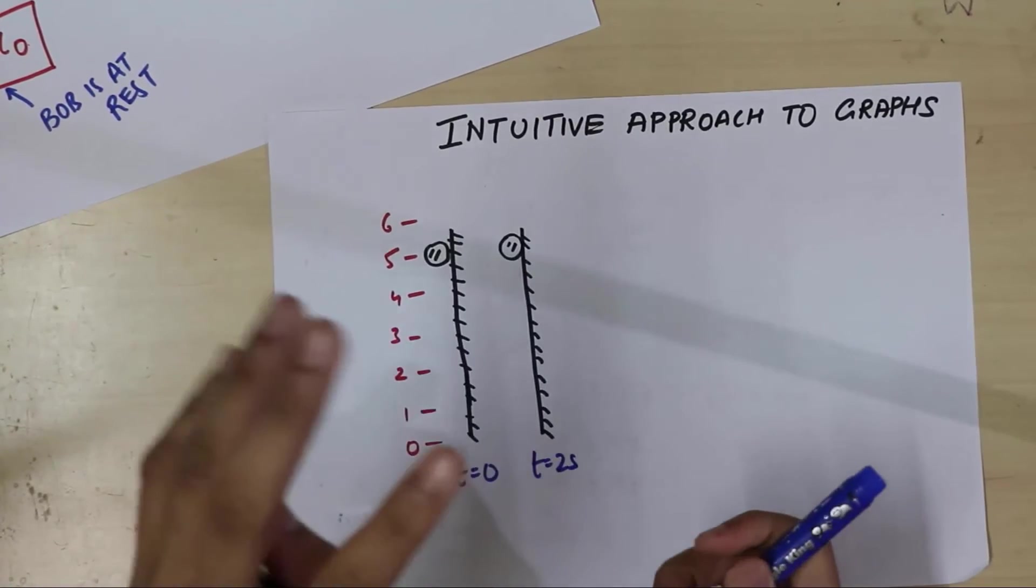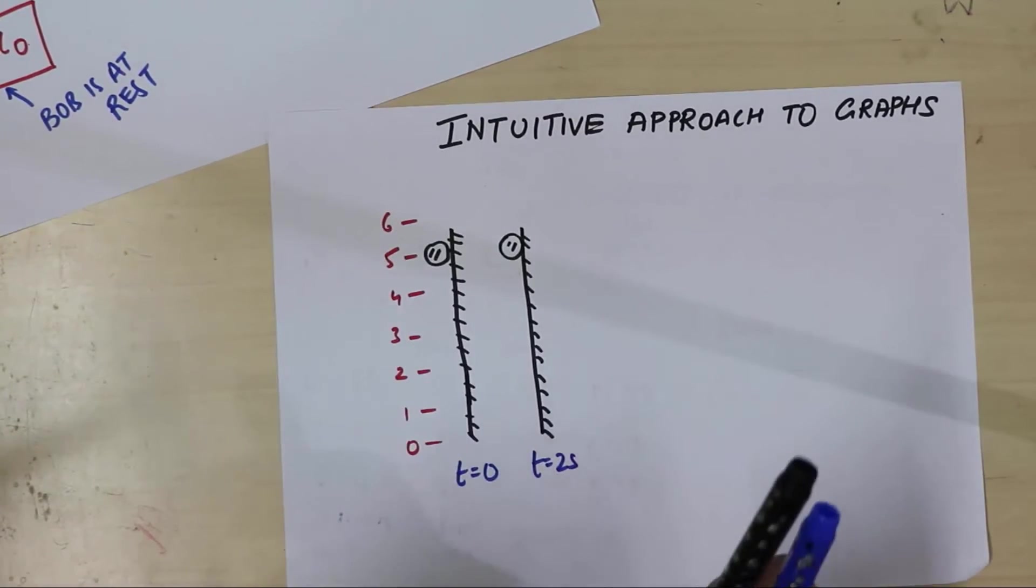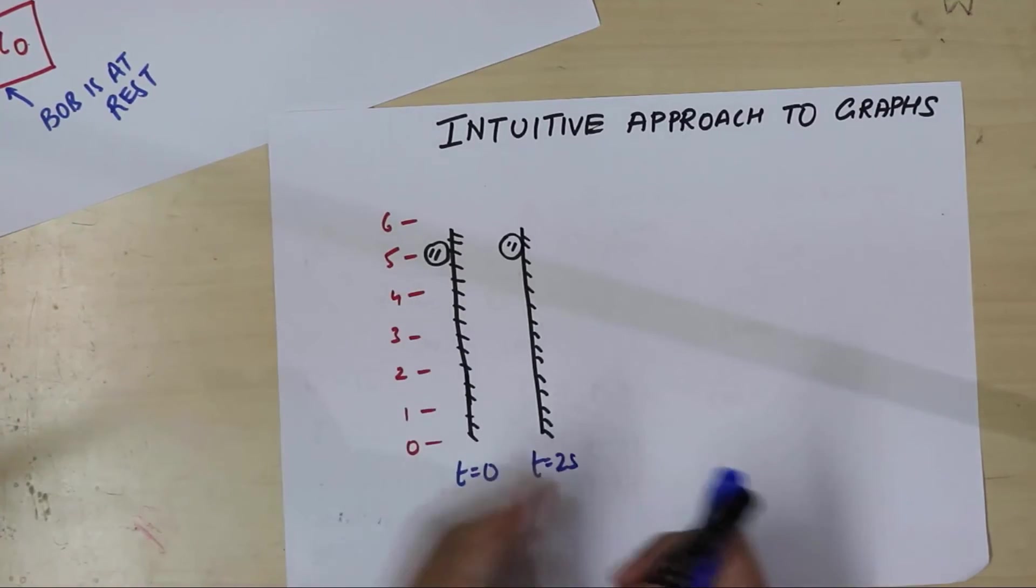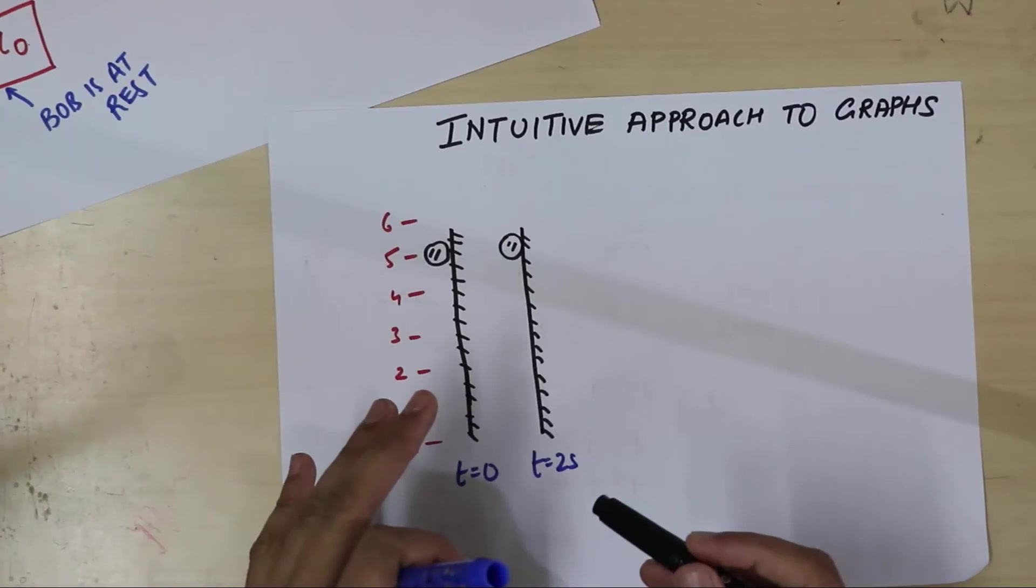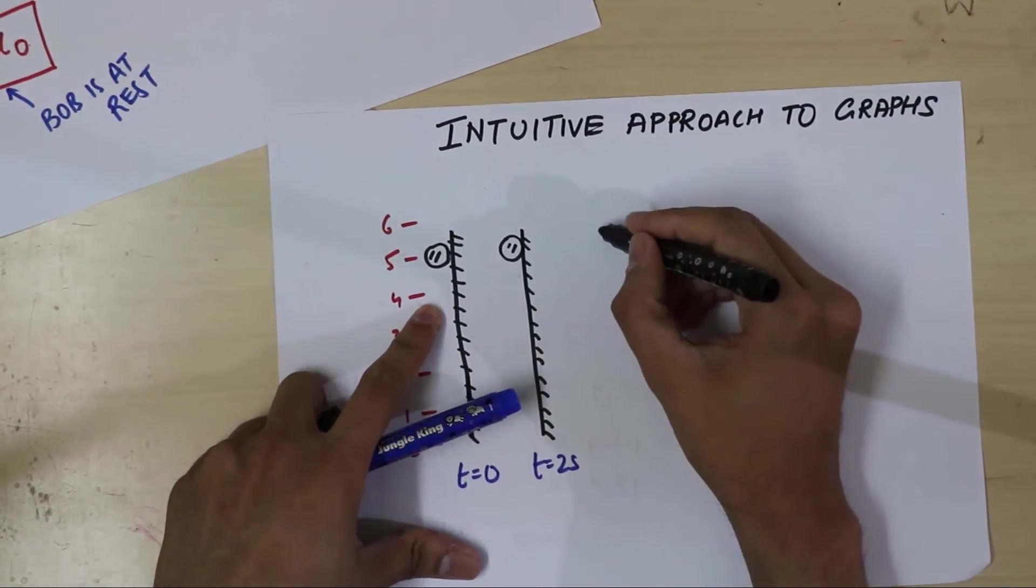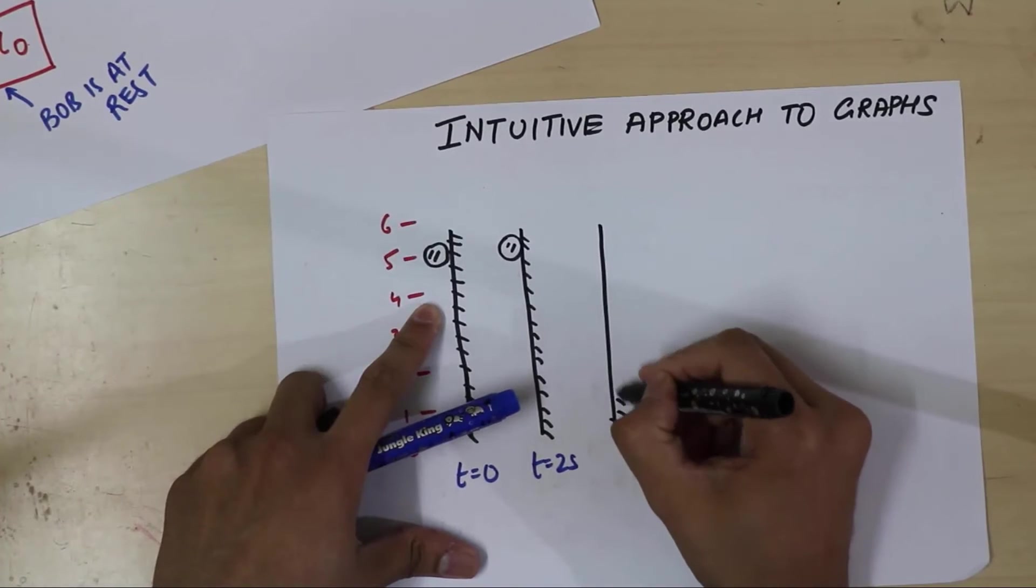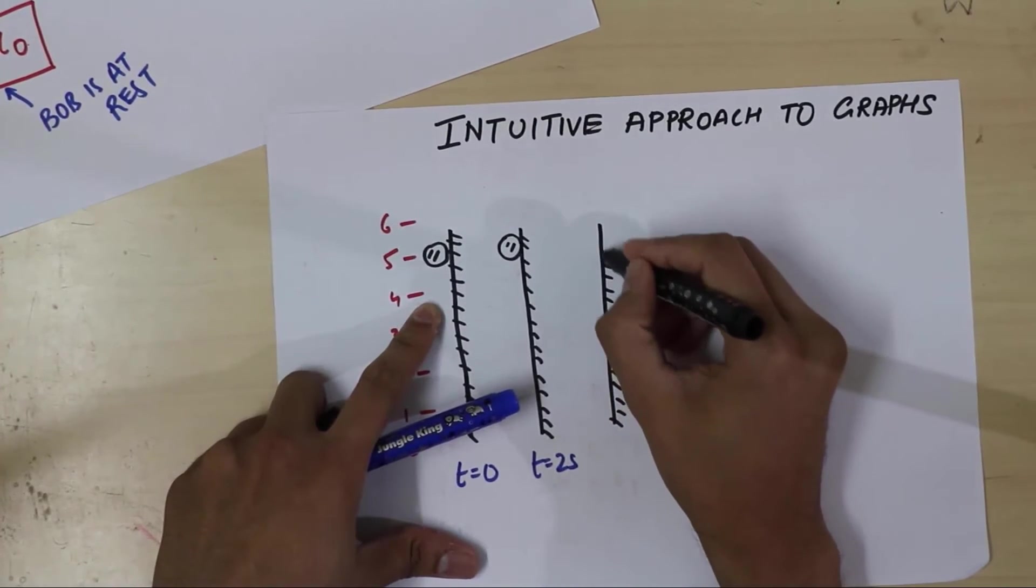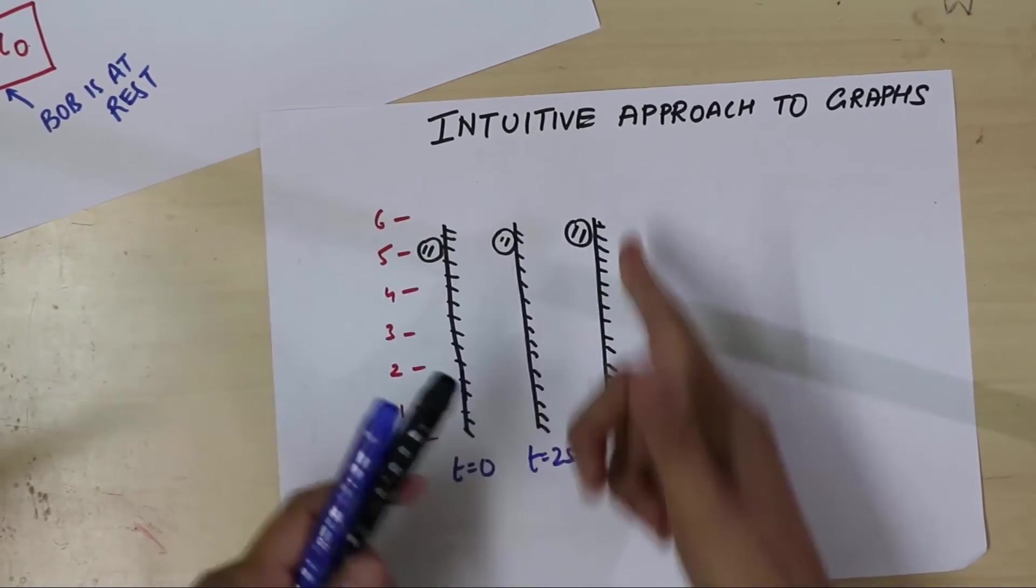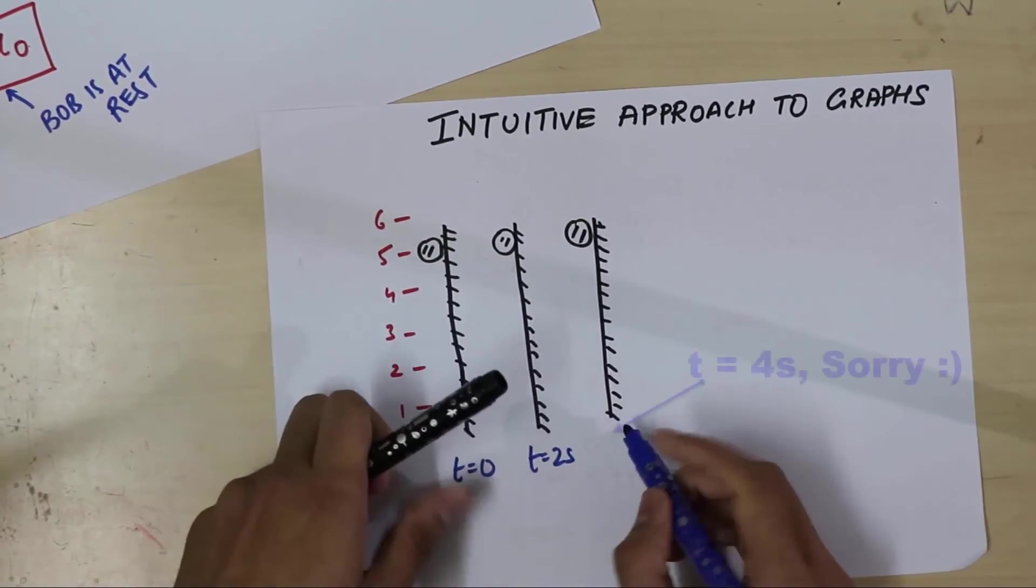We'll allow the clock to tick again. We'll wait for, let's say, another 2 seconds. That means at t equal to 4 seconds, we'll redraw the situation. And it doesn't take a genius to realize that since Bob is at rest, the situation looks exactly identical. So if I redraw this, and I'm not going to draw it again. You pretty much should get it by now. So it's going to still look the same. And this is t equal to 3 seconds.